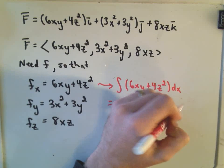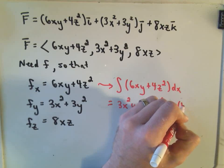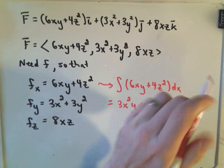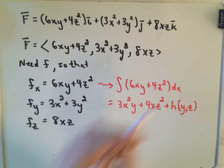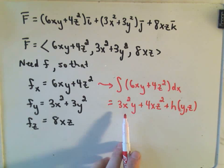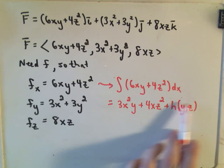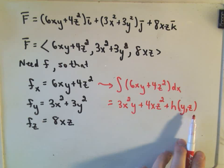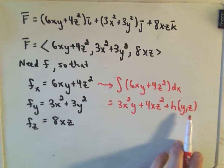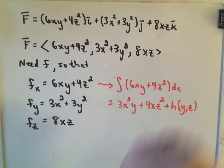The idea is that since we integrated with respect to x, we could have had some function of y and z also present — call it h(y,z). Because if we take the derivative of that function with respect to x, since it doesn't involve x, it would simply equal 0.